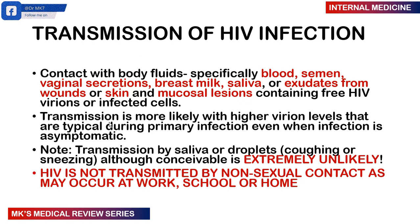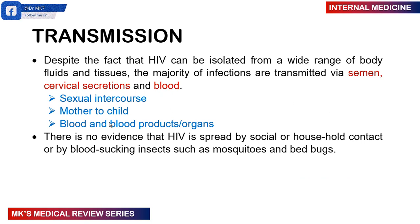A wide range of body fluids and tissues can transmit HIV, but the bulk majority is either through semen, cervical secretions, or blood. This can happen through sexual intercourse — homosexual or heterosexual — through mother-to-child transmission, through blood and blood products or organs, blood donations, intravenous drug use or needle stick injuries. These have become very insignificant because we screen for blood products and organs. There is no evidence that HIV is spread through social or household contact, or through mosquitoes or bugs.